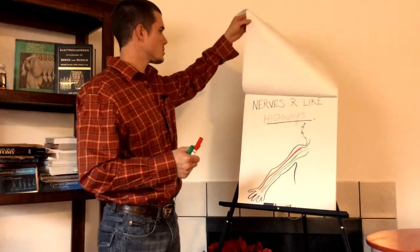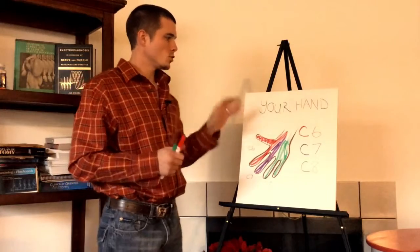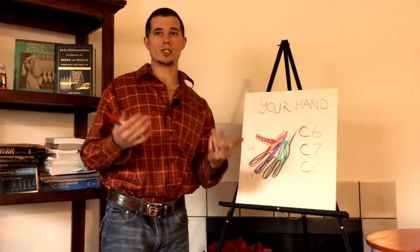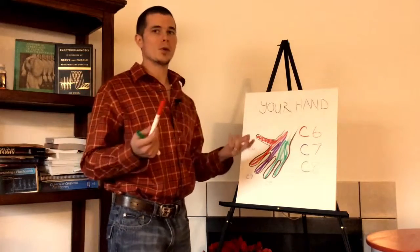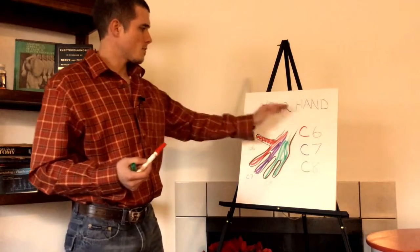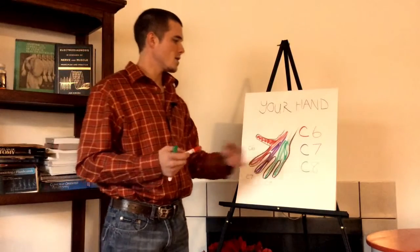So keeping those things in mind, we can zoom into the hand and actually determine which nerve or which lane is closed on the highway so to speak. So I have some fancy terms here, C6, C7, C8.